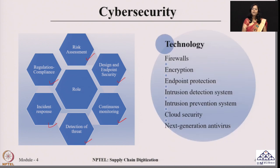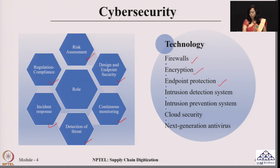When we talk about the technologies associated with cyber security, depending upon where they need to be installed, these technologies can be selected. These may include firewalls, encryption, endpoint protection, intrusion detection systems, intrusion prevention systems, cloud security and next-generation antivirus. There can be more than this as well, but these are some of the well-known technologies being used while implementing cyber security in any Industry 4.0 digital framework.